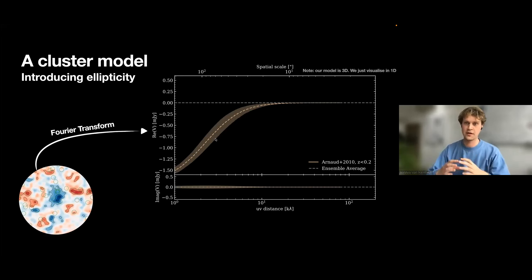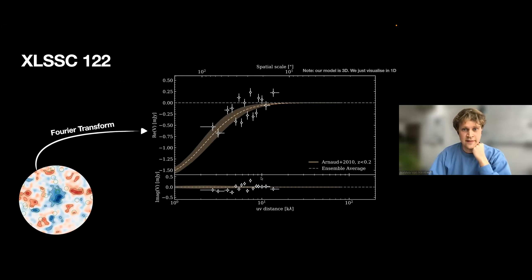And this scatter here is now visualized by this shaded area. What we do is we then do a nested sampling routine. This is a forward modeling routine where you try to find the posterior distribution of your parameters, which describe your pressure profile. You're using generalized NFW. And I can also plot here the data of XLSSC. You can clearly see that we recovered this extended emission here.